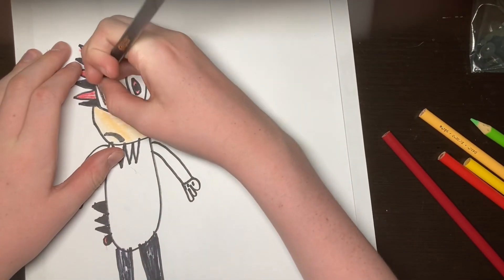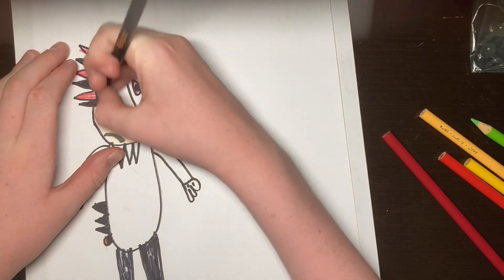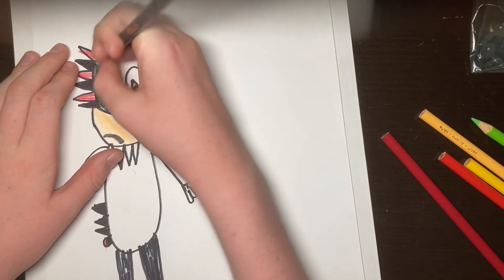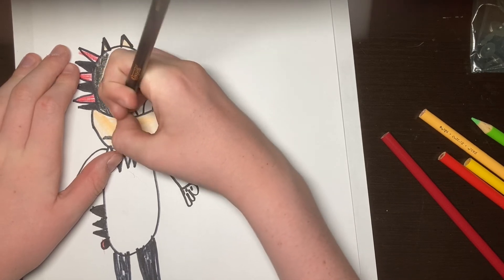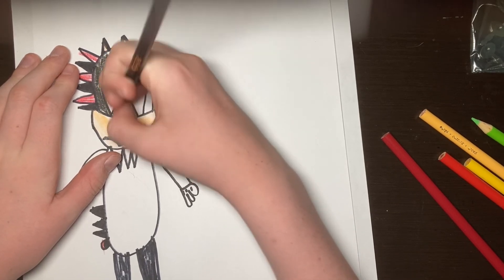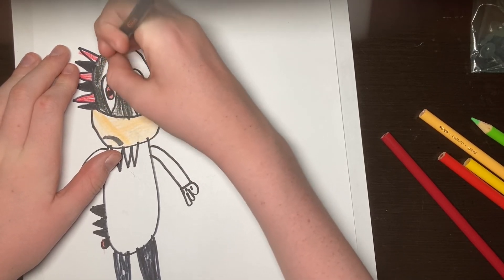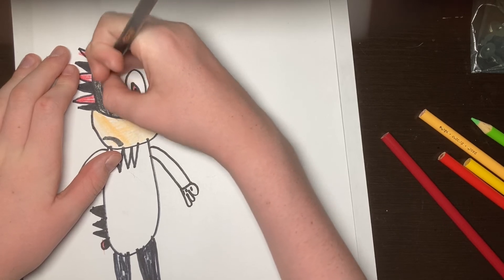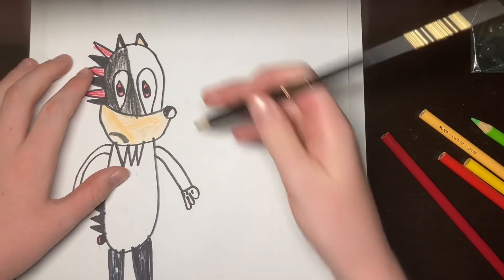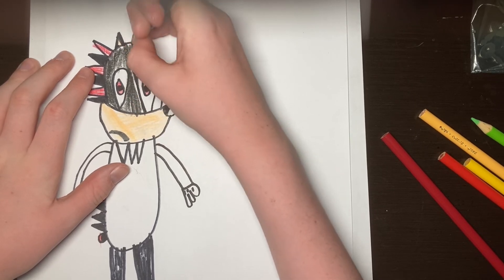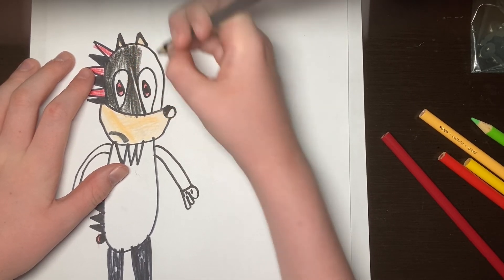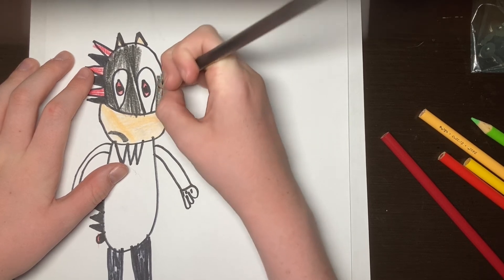And also do the color in his eyes. The Sharpie's kind of drying out, so I'm going to use the black pencil. And also do this. Got that. You got that. Let's do like this. Color it in. Like that.